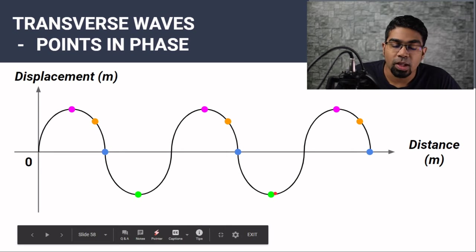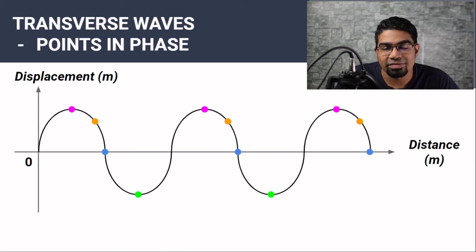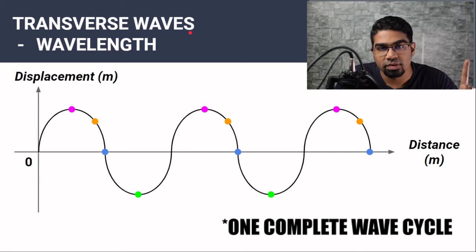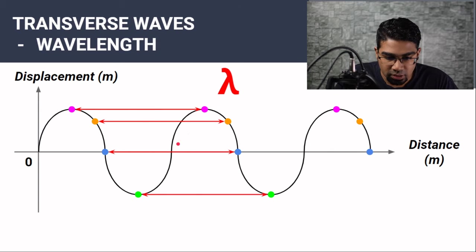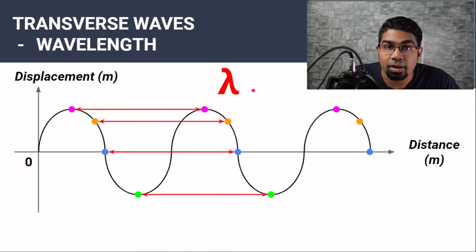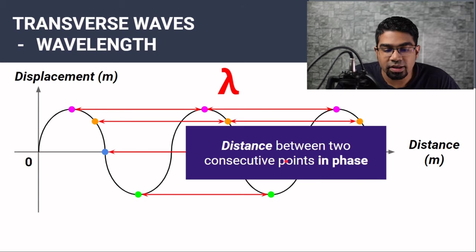When we have points in phase and we take the distance between two consecutive points in phase, then we have measured the wavelength. As the name suggests, the wavelength is the length of one wave — the distance between any two consecutive points that are in phase. The symbol for wavelength is lambda. The wavelength is defined as the distance between two consecutive points in phase.